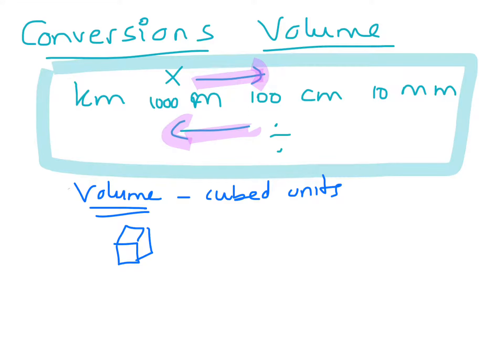Okay, so just looking at converting cube units. Alright, so if we had something that was 1cm by 1cm by 1cm, then the actual volume of that would be 1 times 1 times 1, which is 1cm cubed.